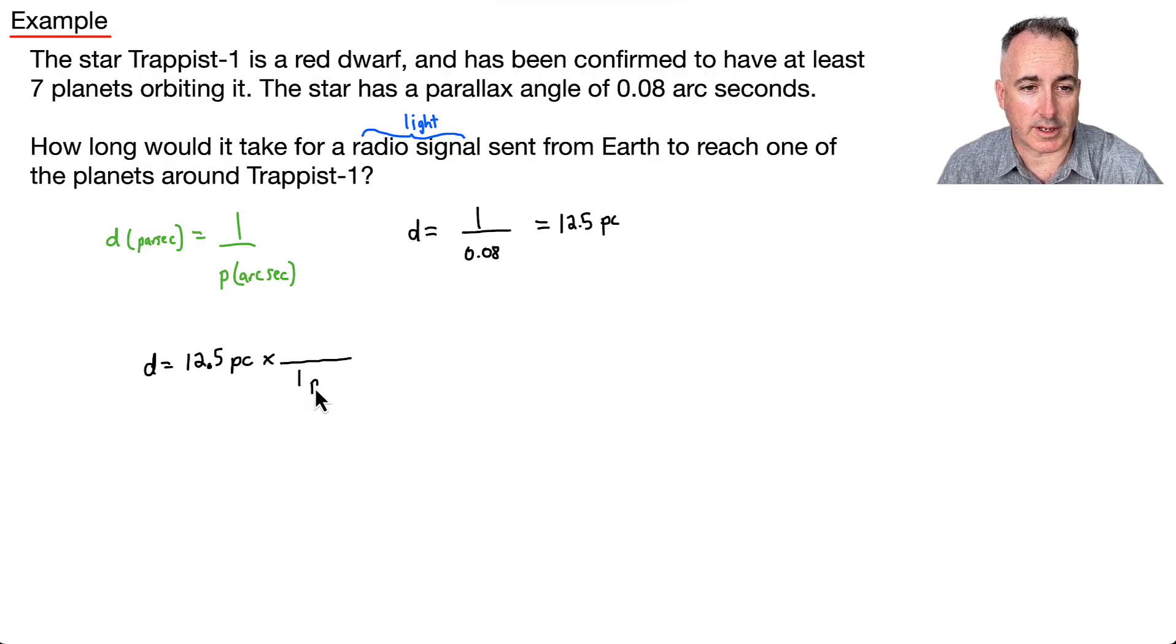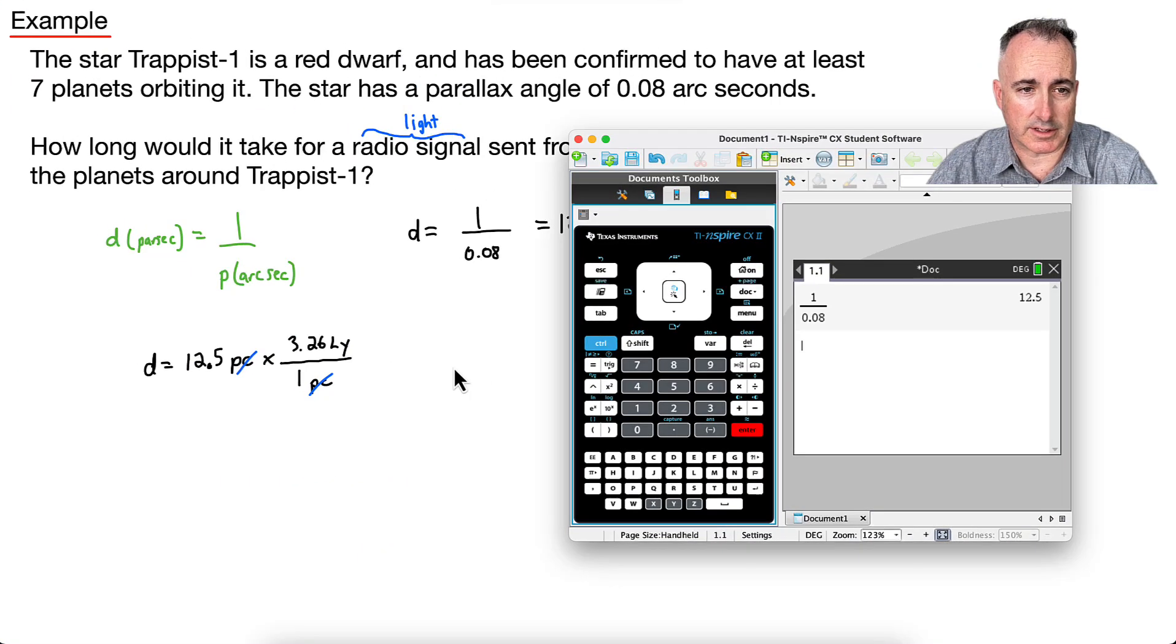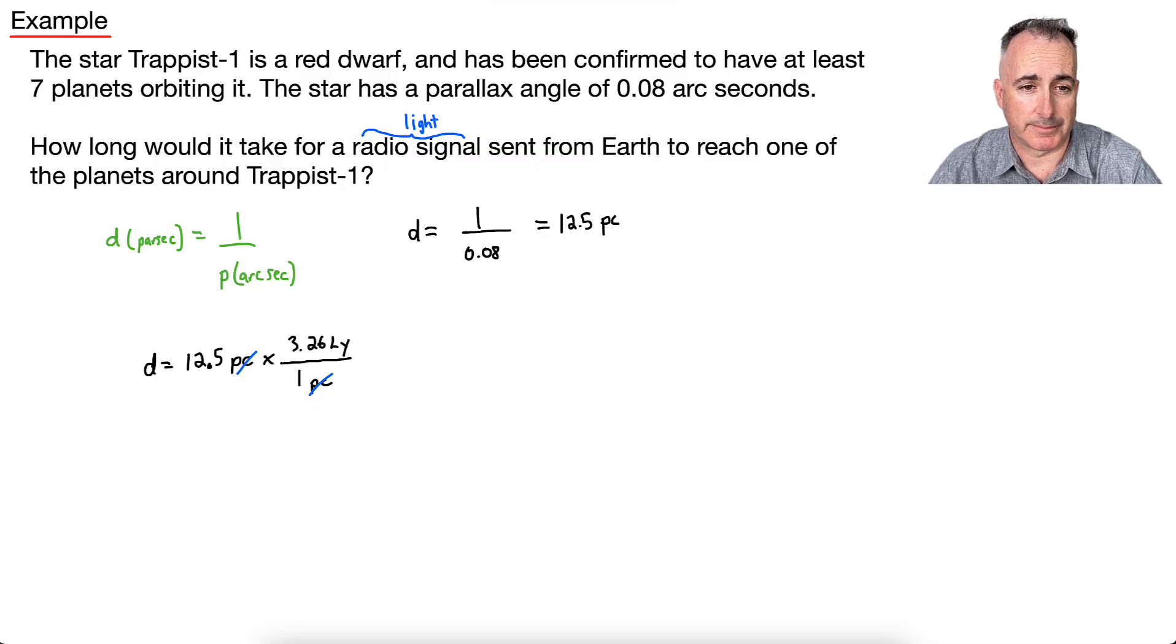I don't want my answer in parsecs though—I want it in light years. But that's okay. I like to do these conversions in this way so I can line them all up. I need to know some kind of conversion factor, and I do. I know that one parsec is 3.26 light years. That means if I write it like this with the light years on top and parsecs on the bottom, the parsecs will cancel out and my distance will be in light years. I'm just going to get on my calculator and say this answer times 3.26, and I end up with 40.75.